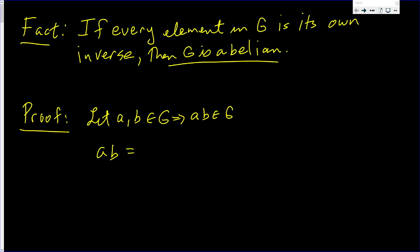Well, AB is equal to AB inverse because it's its own inverse. The inverse of AB is AB. But by property of inverses, AB inverse is B inverse A inverse. But B and B inverse are equal, and A inverse and A are equal. Look at this: AB is equal to BA. This proof is complete.